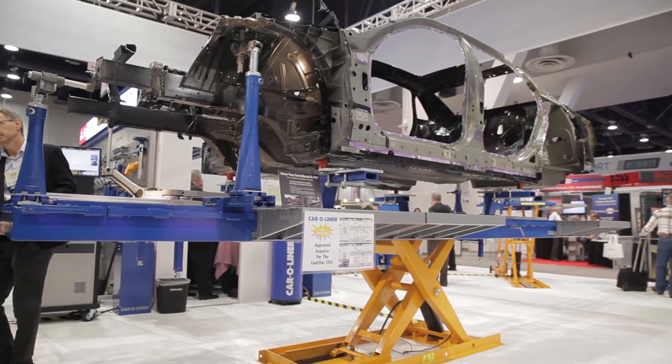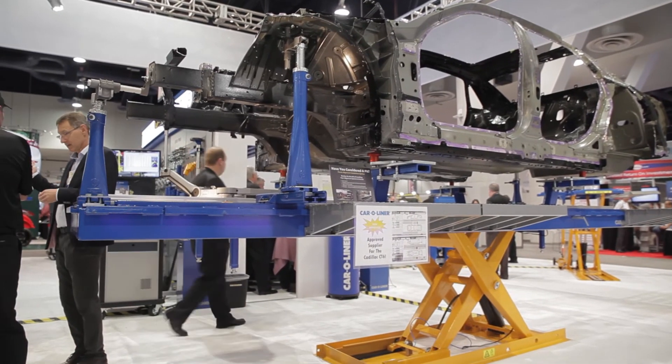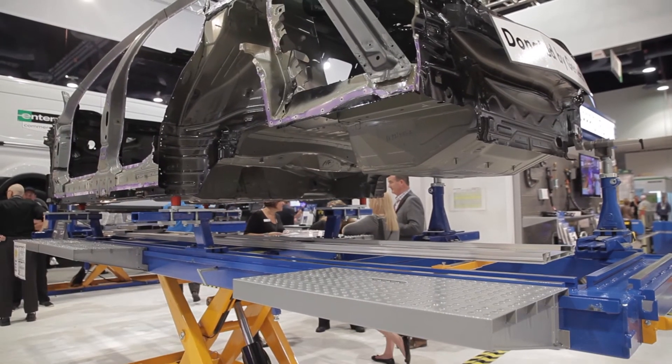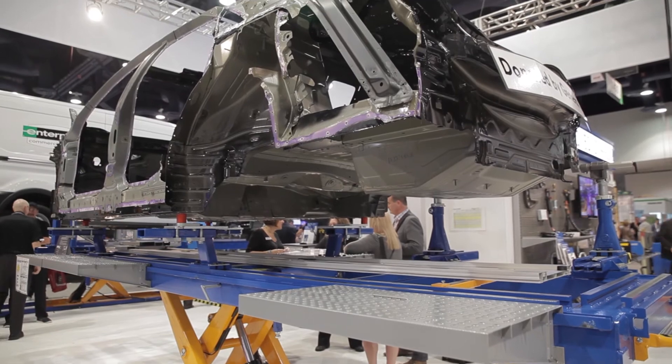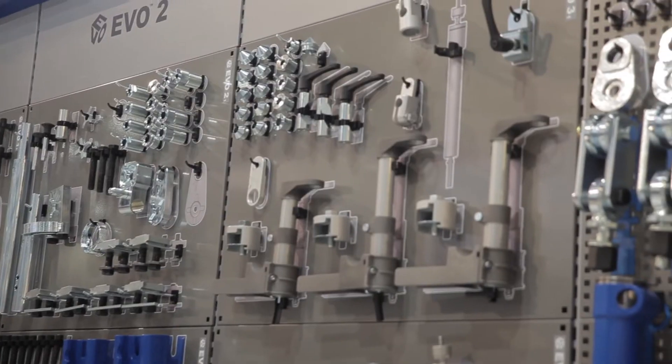So in our show on display we have the new Cadillac CT6. It's a hybrid construction with aluminum and steel. Unique challenges such as the cast aluminum strut tower and how do we hold that.